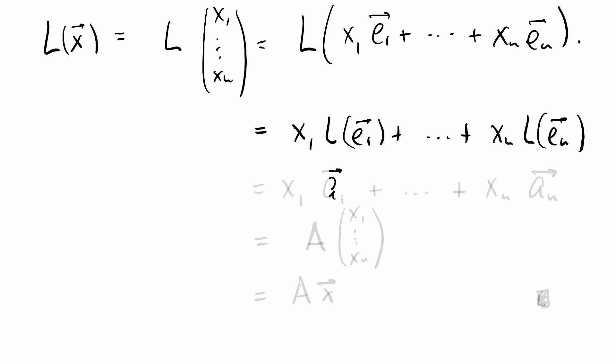We know by definition what this is. L(E_1) is the first column of A, L(E_N) is the nth column of A. Looking at this in terms of matrix multiplication, this is A times the vector X_1 through X_N, which is A times X. QED.